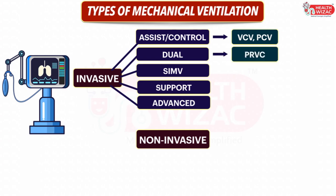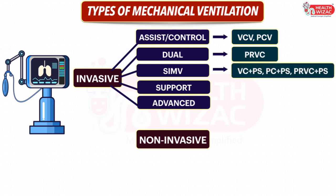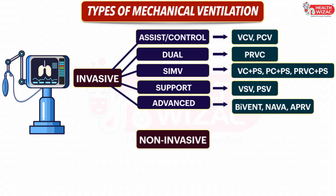Dual mode comprises Pressure Regulated Volume Control. SIMV mode comprises Volume Control plus Pressure Support mode, Pressure Control plus Pressure Support mode, and Pressure Regulated Volume Control plus Pressure Support mode. Support mode comprises Volume Support Ventilation and Pressure Support Ventilation. Advanced modes specific to some machines only include BIVENT, NAVA (Neurally Adjusted Ventilatory Assist), and APRV (Airway Pressure Release Ventilation).